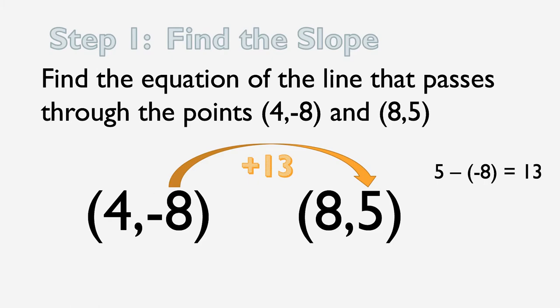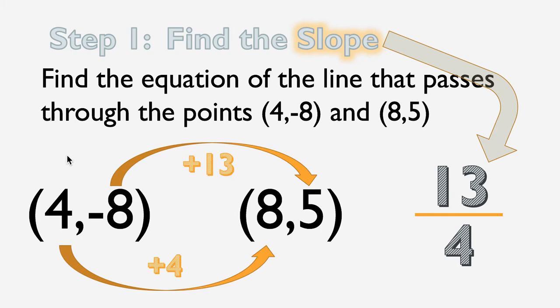Now we're going to find the change in the x-values. So from 4 to 8, it goes up 4. And now we have our slope, 13 over 4. The change in the y-values over the change in the x-values.